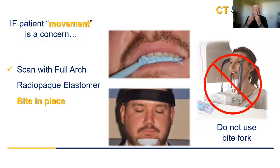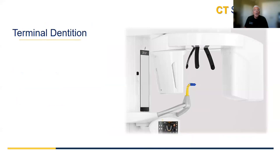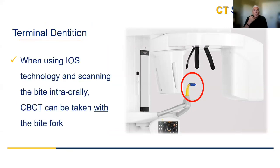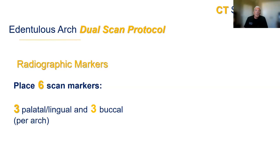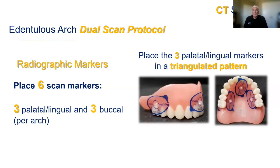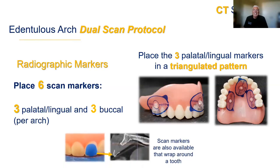We prefer patients use the bite fork when scanning; however, when movement is a concern, scanning with the positioning jig in the chin rest is acceptable to eliminate potential blur. If a patient has been using an occlusal splint to open their vertical, scan them closing onto that splint. For a dentureless arch, the dual scan protocol requires two scans: one with the denture in the patient's mouth with radiographic markers, and a second scan of the denture by itself.